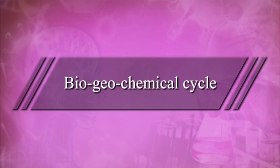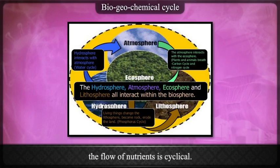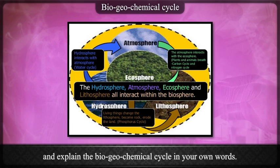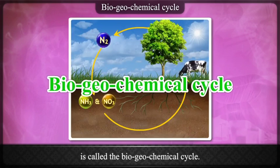Biogeochemical Cycle. Though the energy flow in an ecosystem is one-way, the flow of nutrients is cyclical. All organisms need nutrients for their growth. The cyclical flow of nutrients within an ecosystem is called the biogeochemical cycle.